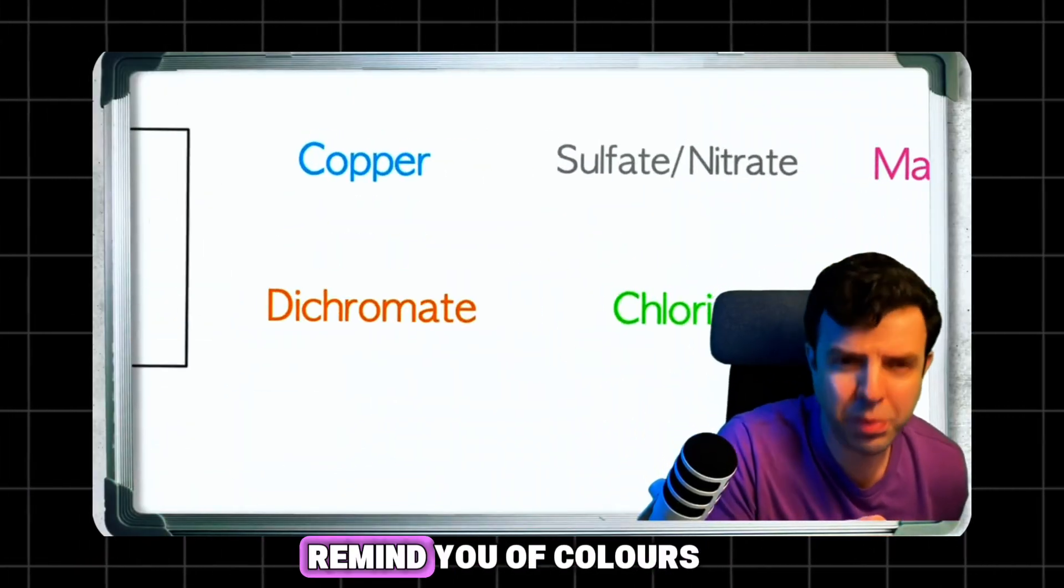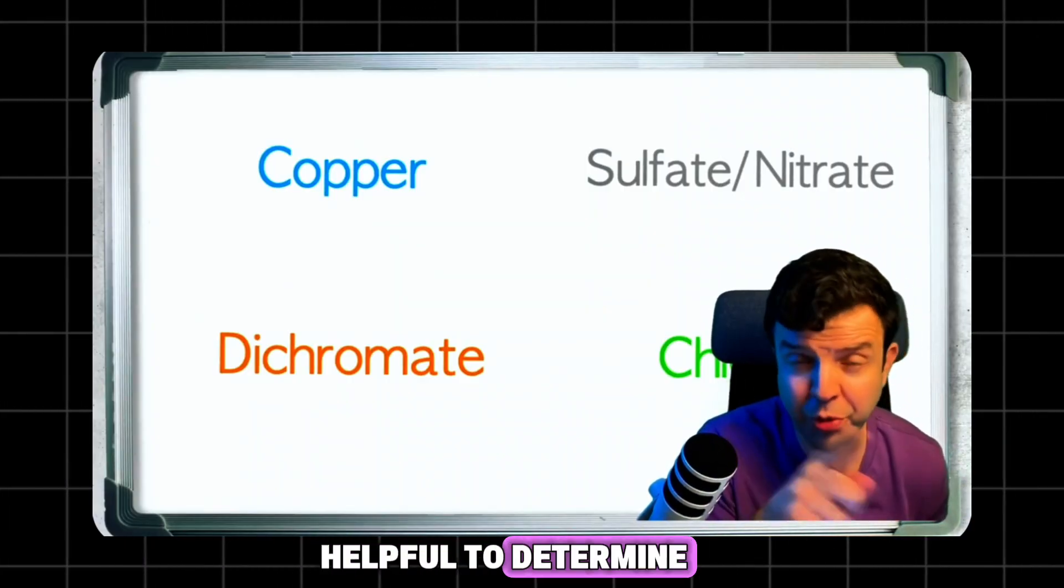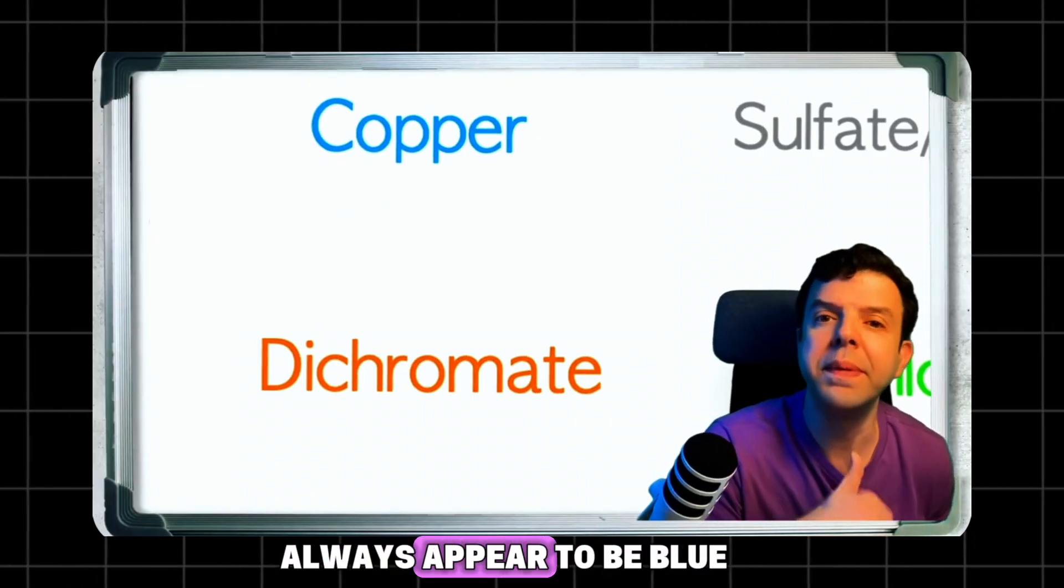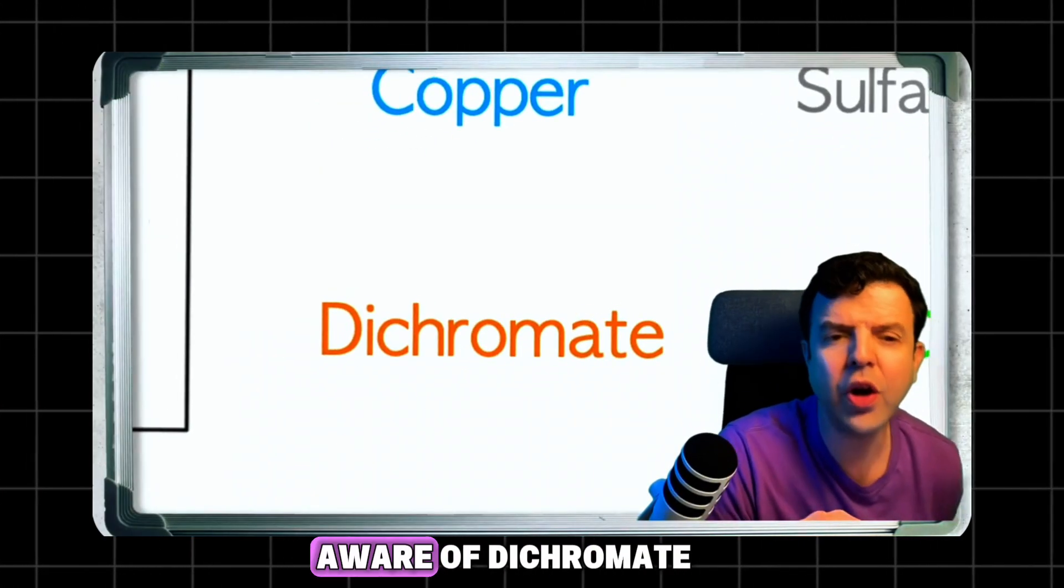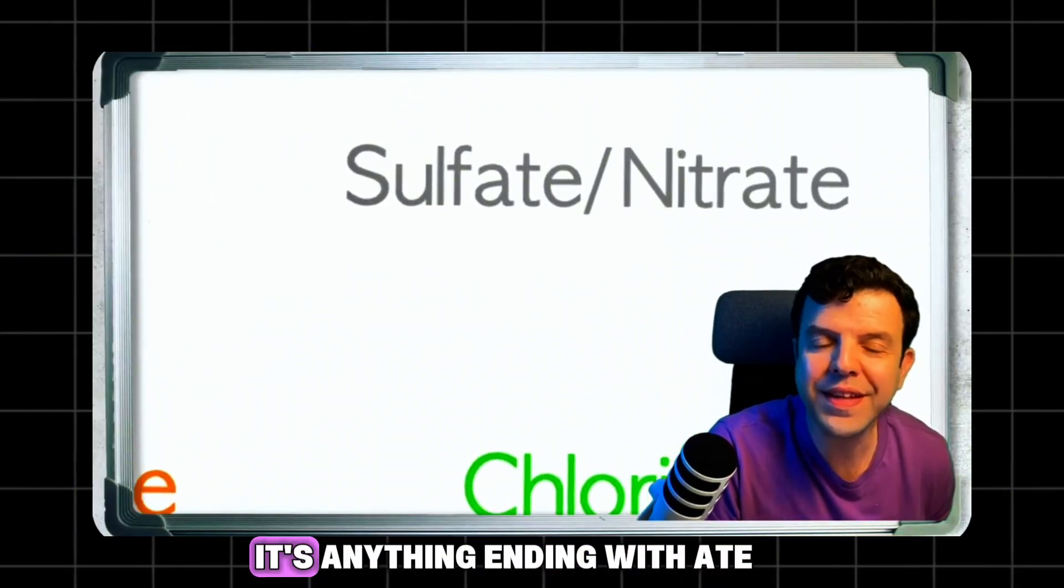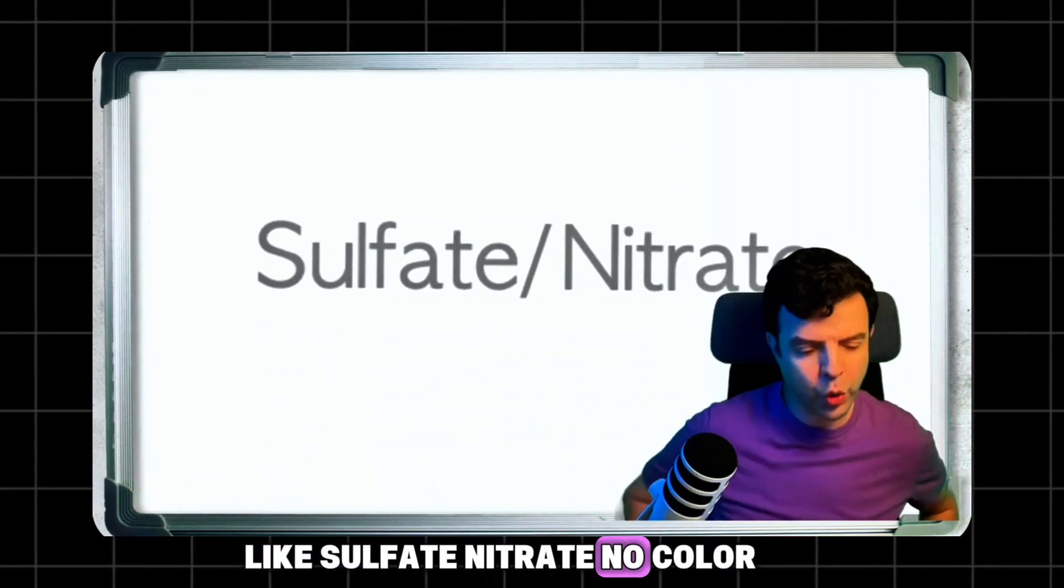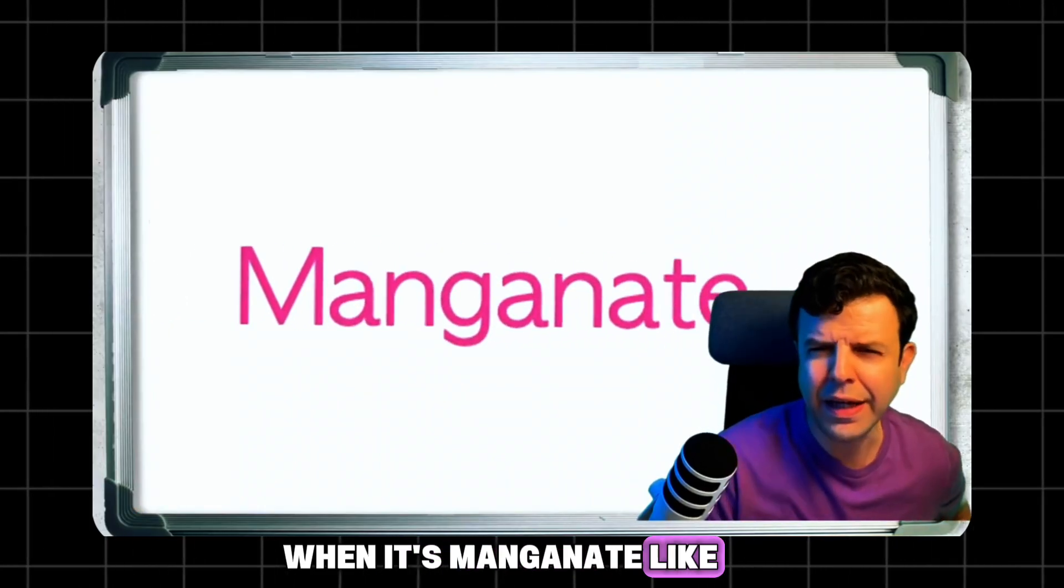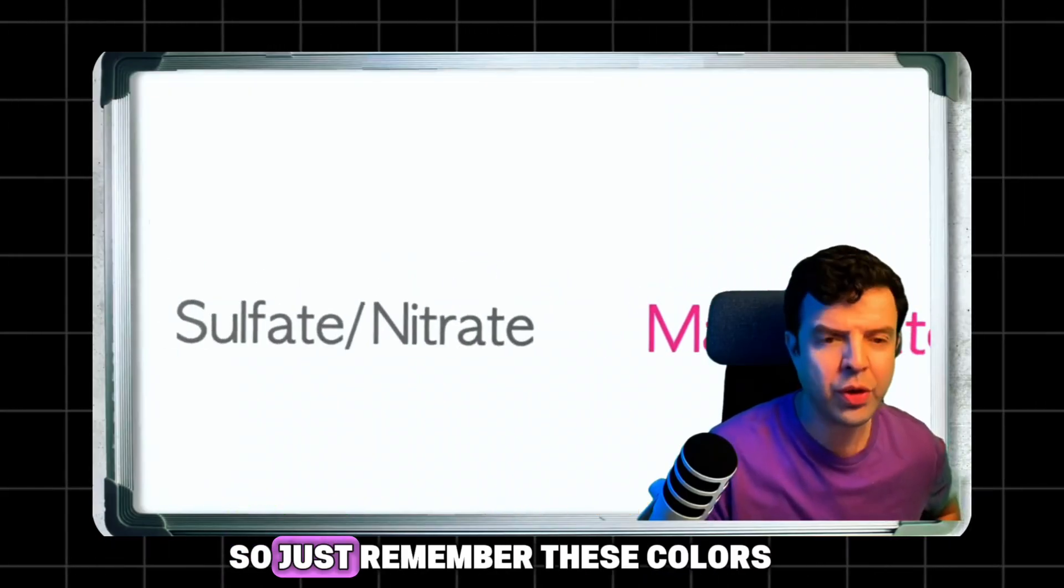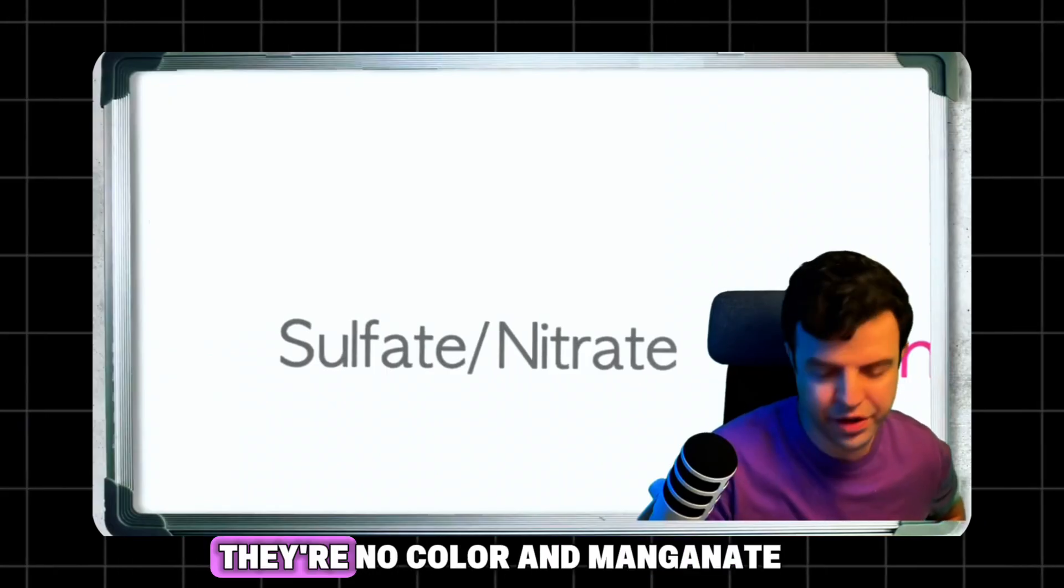I'll remind you of colors because it helps determine where ions are going. Copper ions are blue, dichromate is orange, anything ending with -ate like sulfate or nitrate has no color, and manganate is purple. So remember: copper is blue, sulfate and nitrate have no color, and manganate is purple.